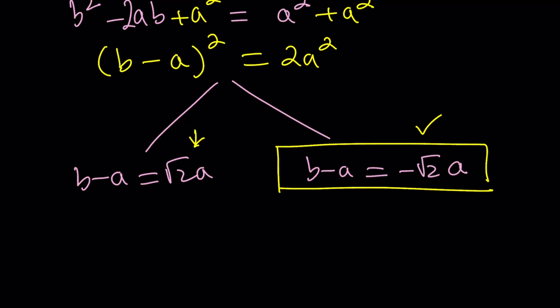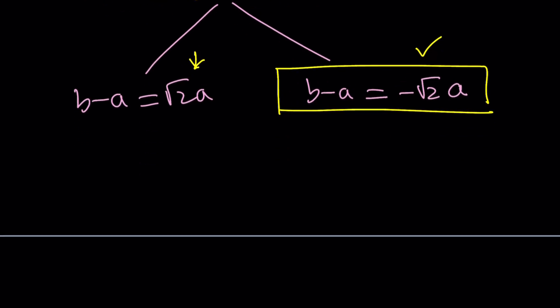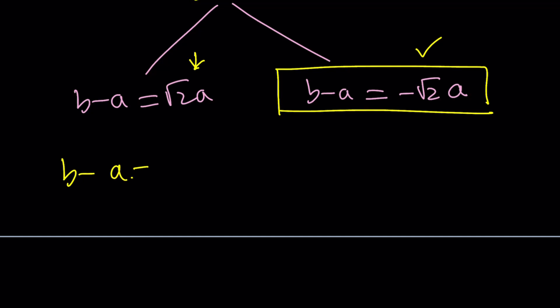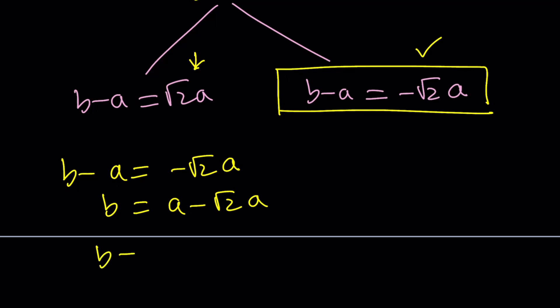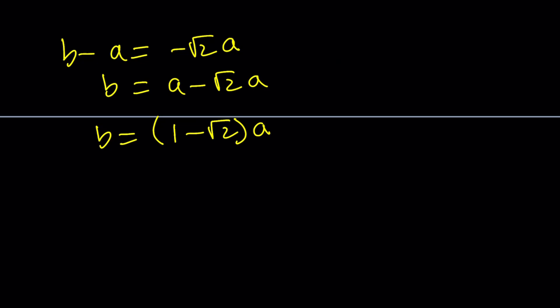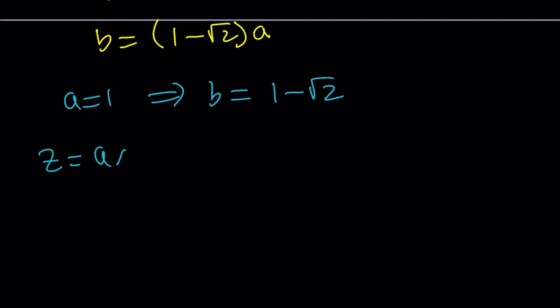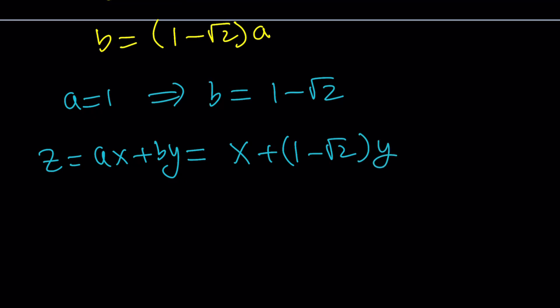This is going to be a little bit time consuming, so bear with me. So b minus a equals negative root 2·a. Let's go ahead and add a to both sides and factor out a, so we can write this as a multiple of a. In other words, b over a is a constant. Let's set a equal to 1; then b will be 1 minus root 2. So we've got a and b values — obviously their multiples will also work. So z was written as ax plus by, and now we can write it as x plus 1 minus root 2 times y. Notice that z is now a linear combination of x and y.